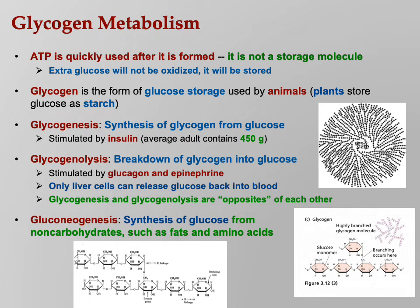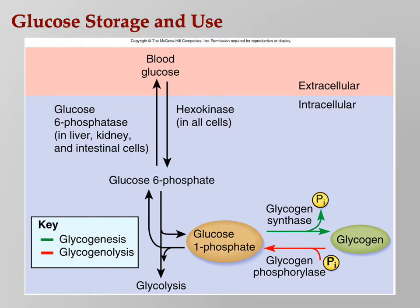Gluconeogenesis — look at the root words: gluco means sugar, neo means new, genesis means create. Gluconeogenesis means making new glucose. It does not mean making glucose from sugar — sugar is already made of glucose. Gluconeogenesis means making glucose from non-carbs, specifically taking fats and amino acids from the breakdown of proteins and actually forming glucose. Your body can basically take any dietary component and turn it into glucose.